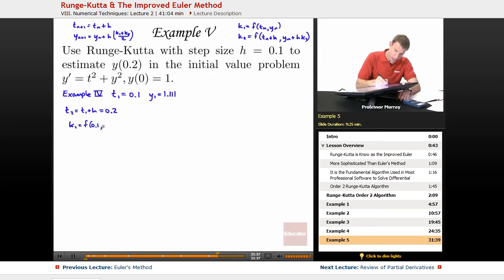My f function is given by the differential equation right here, t squared plus y squared. That's f right there. And so this is 0.1 squared plus 1.111 squared.